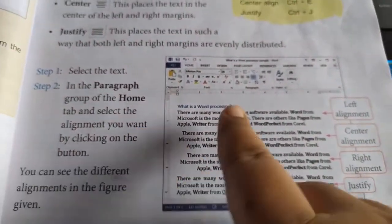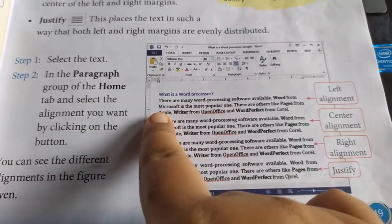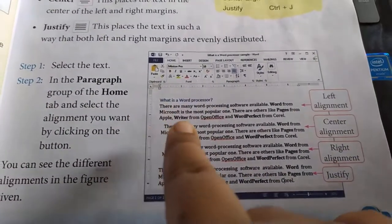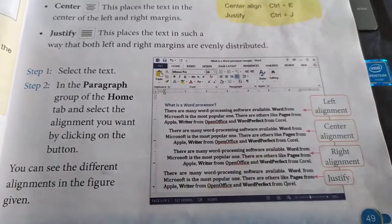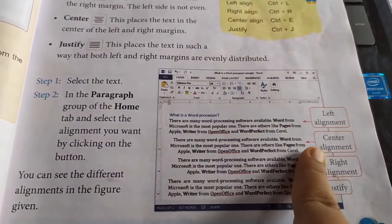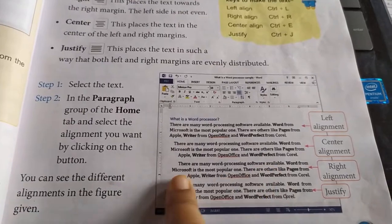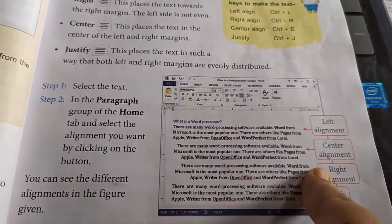Now see the picture. This is the left alignment. This is the center alignment. This is the right alignment. And this is the justify. Done.